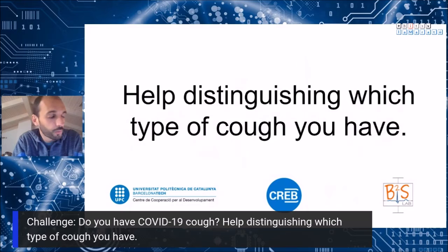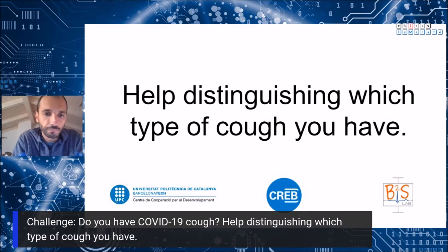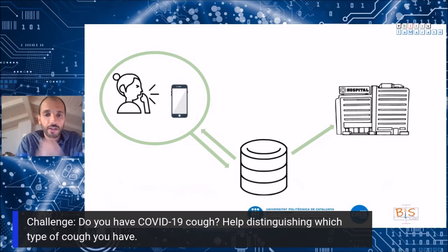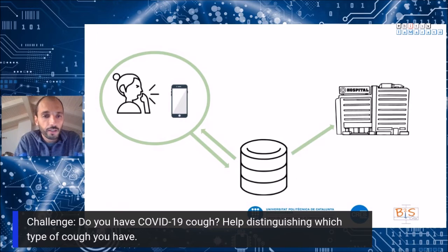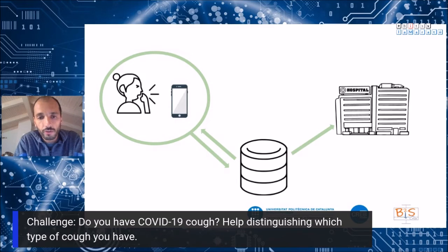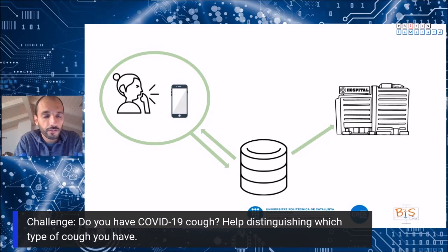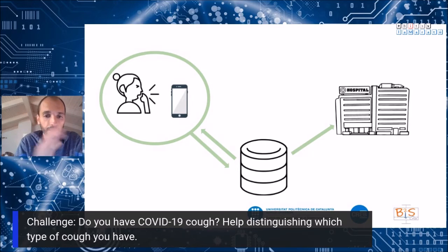So the challenge we propose is helping to build an automatic system that helps distinguish which type of cough you have. In this slide you can see the general architecture of the system we envision: the user records audio using a cell phone, this audio is sent to a server where the algorithm runs and outputs a prediction, and this prediction is sent back to the user and also to the health system so they can take the required actions.